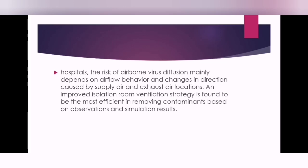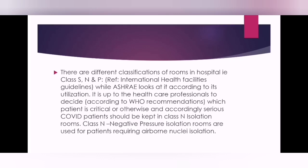There are different types of isolation rooms: S class, N class, and P class — that is negative, positive, and others — according to International Health Facilities Guidelines. According to WHO recommendation, it is up to the healthcare professional to decide which patient is critical, and accordingly serious COVID patients should be kept in a Class N isolation room, which is completely isolated from other rooms.